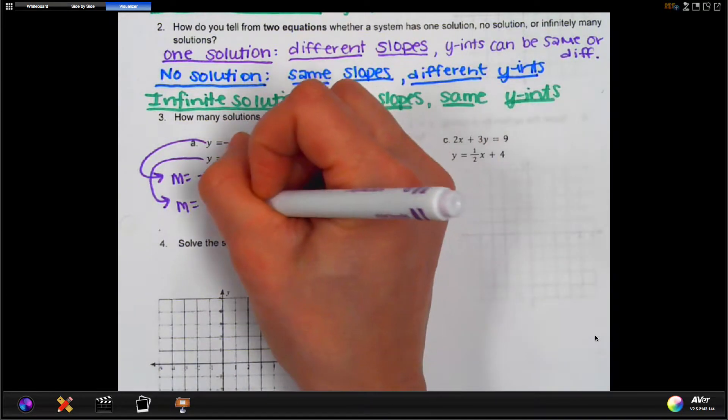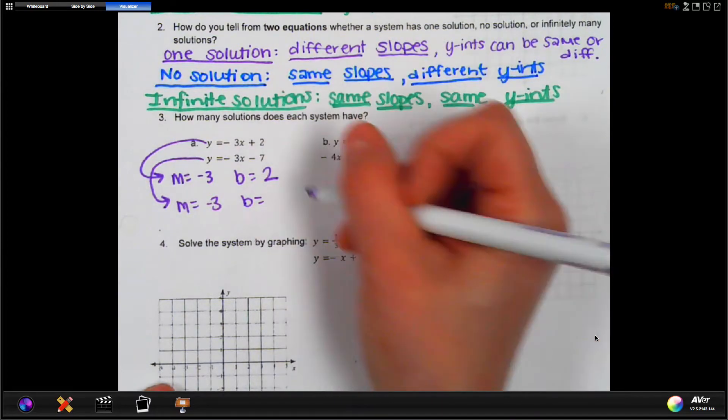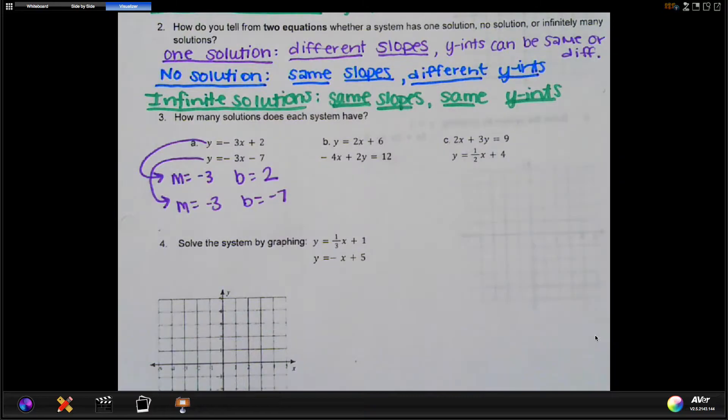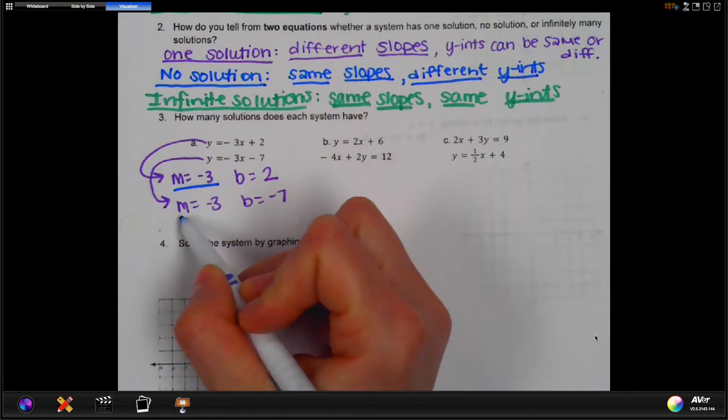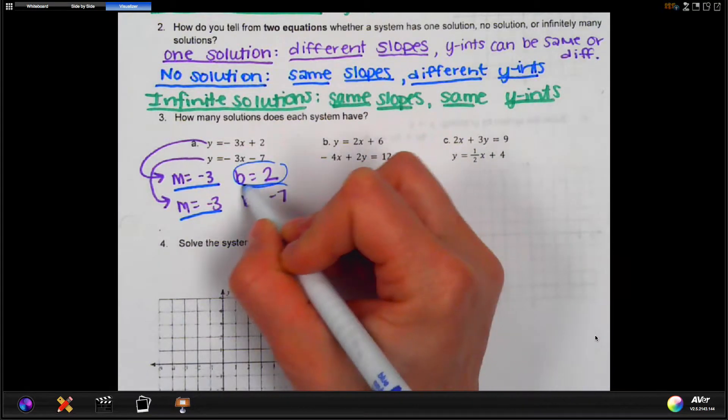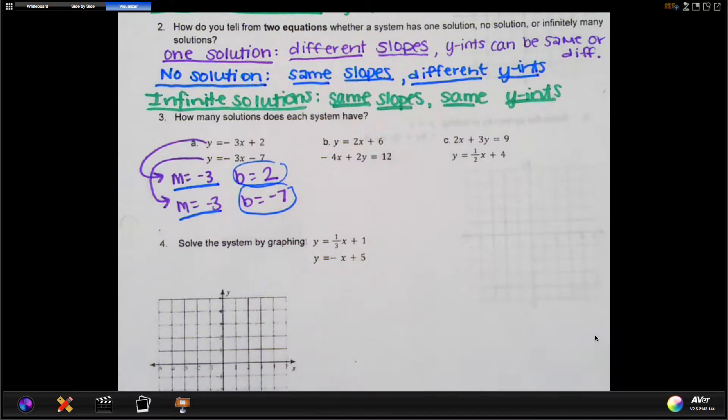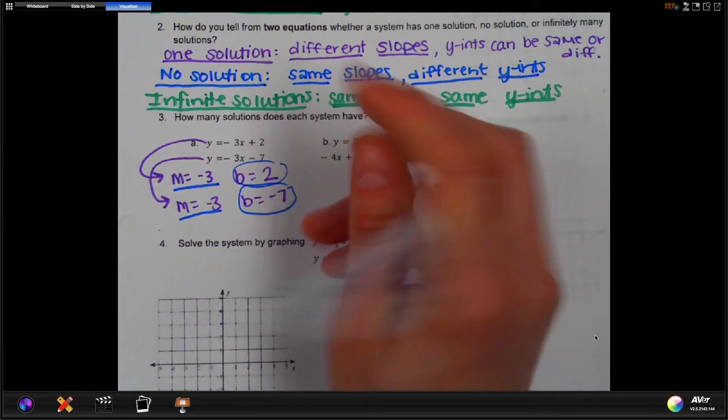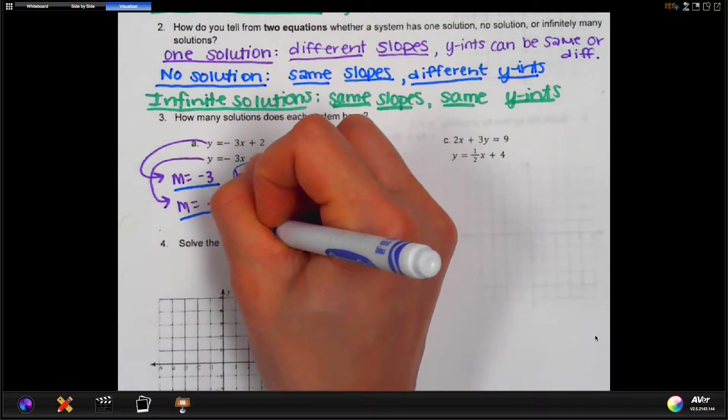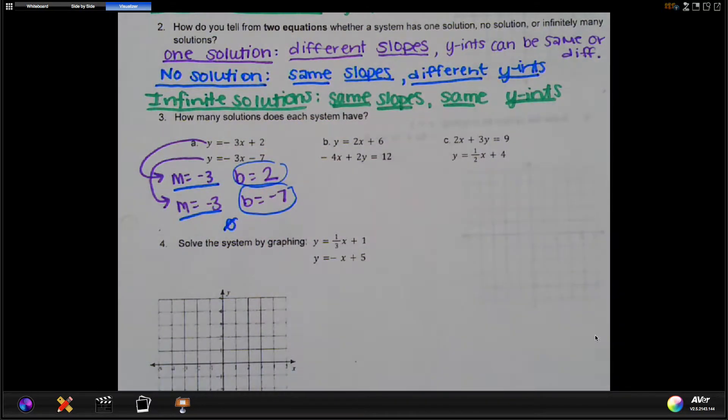This M is the same. It's also negative three. But the B, the y-intercept, is negative seven. So if you look at our notes from above, we can see that our slopes are indeed the same, same slopes. But our y-intercepts here are different. We have a two and a negative seven. And so the one that has the same slope and different y-intercepts is no solution.